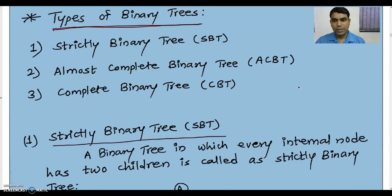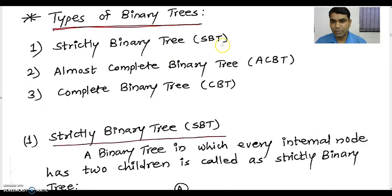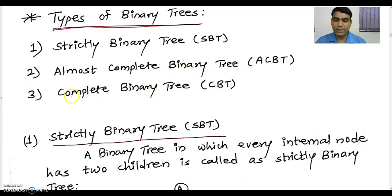The next topic for today is types of binary trees. There are 3 different types of binary trees. One is strictly binary tree, also known as SBT. Another is almost complete binary tree. And the last one is complete binary tree, also known as full binary tree.